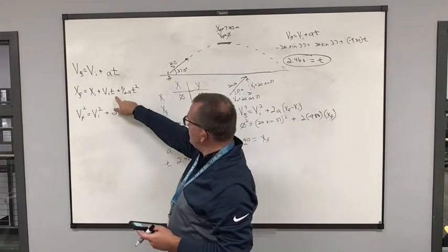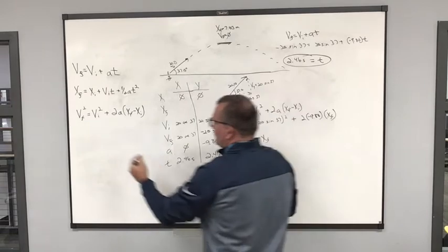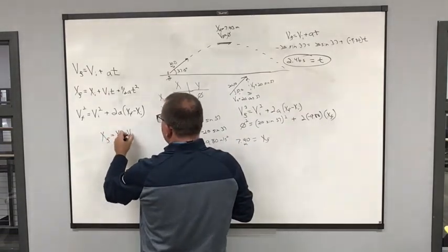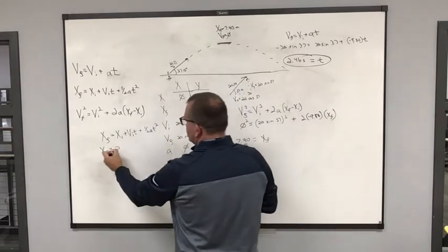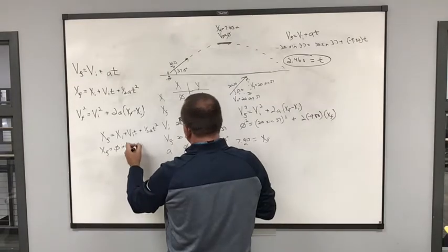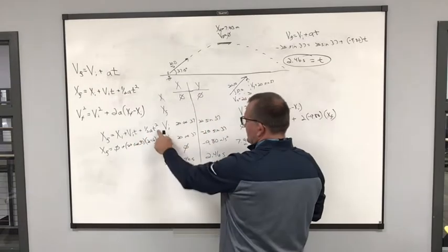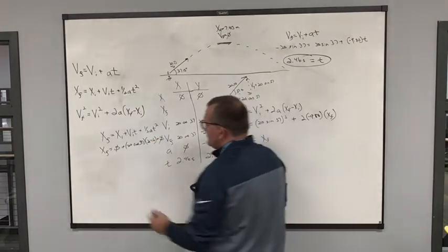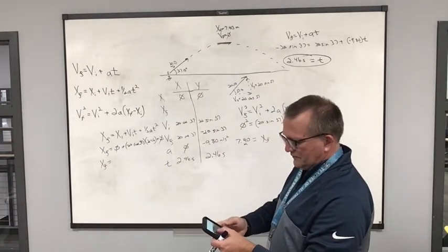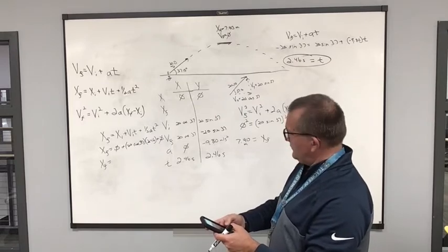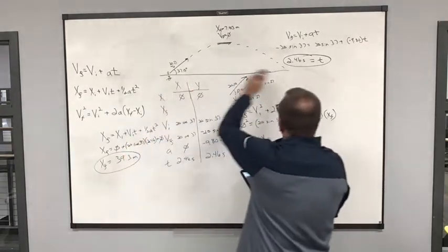For part C — how far it travels — using xf = xi + vi·t + ½a·t² in the x-direction: xf = 0 + 20·cos(37°) × 2.46 + 0. So xf = 20·cos(37°) × 2.46 = 39.3 meters. That is the maximum horizontal distance traveled.